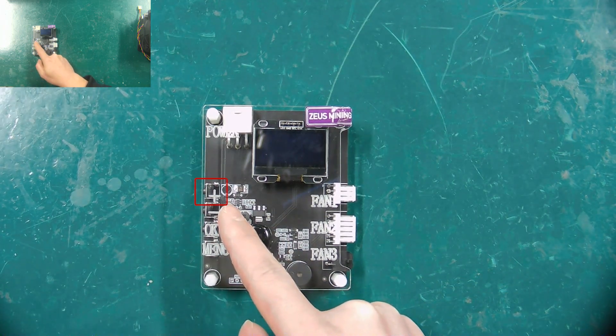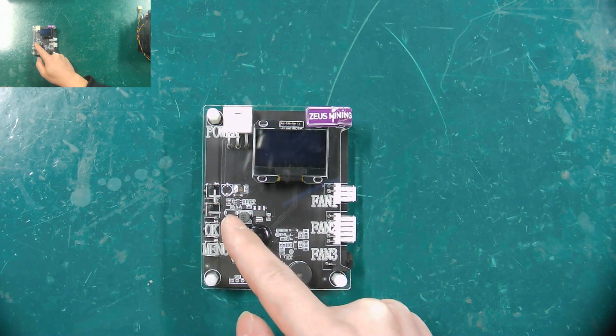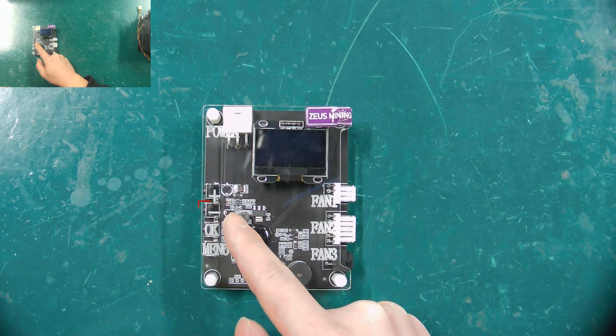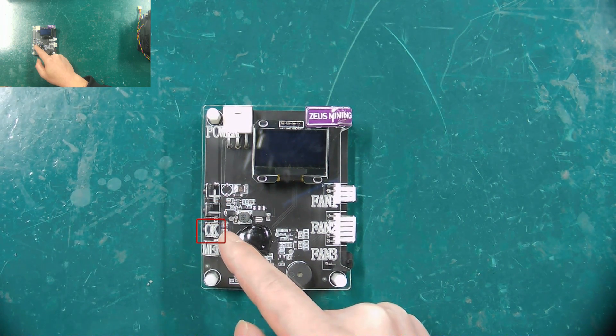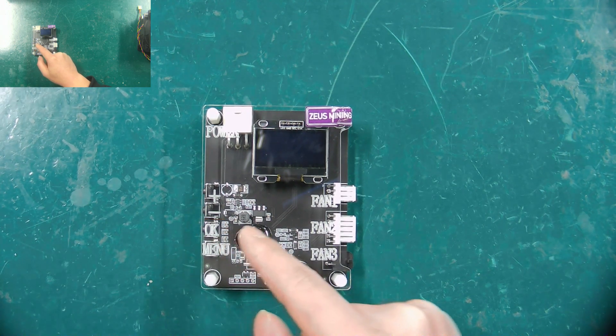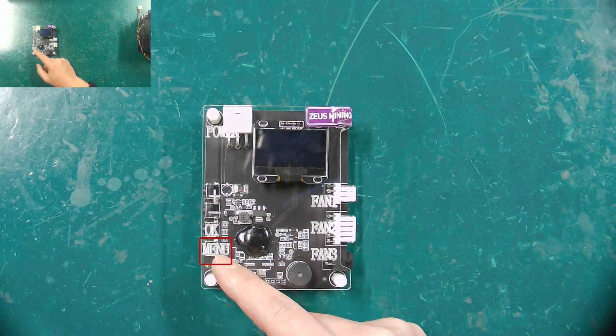The plus button can be used to change menu options or increase values, while the minus button can also change menu options but decrease values. The OK button is mainly used to save the set parameters. After each change in parameters, we need to press the OK button to save it. The menu button is used to open the menu options, then set and adjust related parameters.